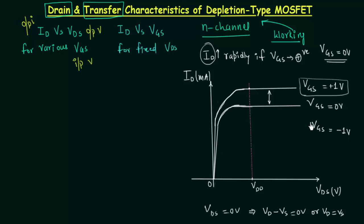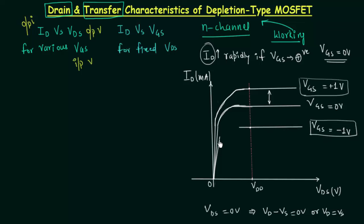When VGS is made negative, for example -1V, the gate becomes negative. This pushes electrons in the n-channel away and attracts holes from the p-type substrate toward the gate. Electrons recombine with holes, reducing the number of free electrons available for conduction in the channel and thereby reducing the drain current ID for the same VDS.